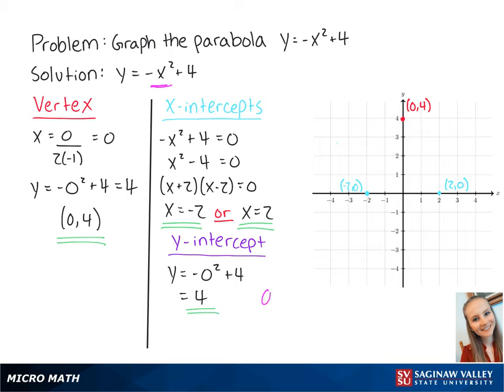The coefficient of x squared, a, is less than 0, so the parabola opens down. If we connect the points on the graph, we get a parabola that looks like this. The axis of symmetry is the line that goes through the vertex at x equals 0. Now we have labeled and graphed our parabola.